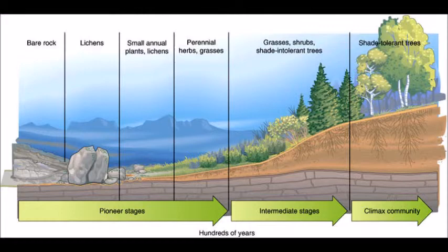This starts on rock formations, such as volcanoes or mountains, or in a place with no organisms or soil. Once these pioneer plants start to decay, they form a thin layer of soil, which grasses and some shrubs are able to live in. Then these shrubs and grasses further decay, creating more and more nutrient-rich soil.